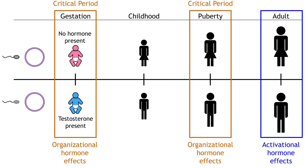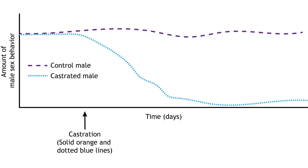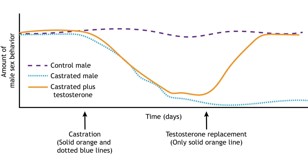Removal of the activating hormone will cause the behavior to stop, but replacement later will cause the response to begin again because the brain has been previously organized to produce those behaviors when hormones are present. The role of activational hormones can be demonstrated by adult castration in male rats. Healthy males with intact testes will show sexual behavior when placed with a female rat. Castration, the removal of the testes, will cause males to stop showing sexual behavior because the activating hormone, testosterone, is no longer present. However, if the castrated males receive testosterone replacement, they will resume showing sexual behavior. The sexual behavior brain circuit was organized during development by exposure to gonadal hormones, and in adulthood, that circuit can be activated by testosterone. The adult behavior can only be seen when the activating hormone is present.